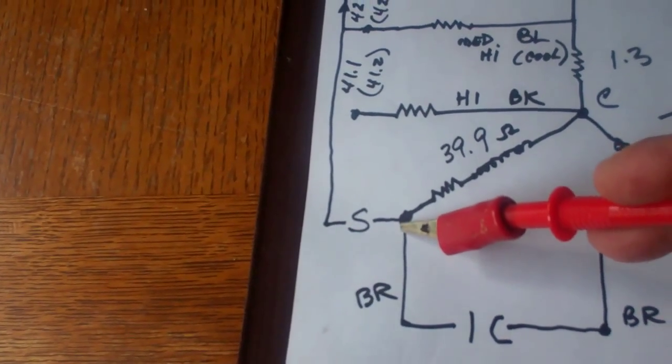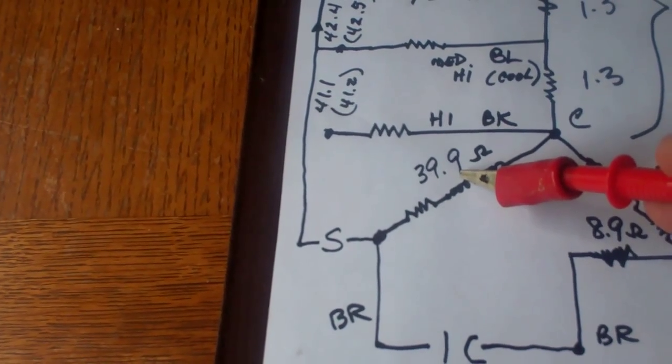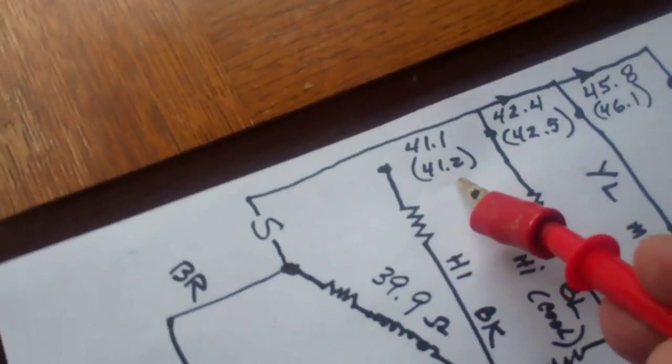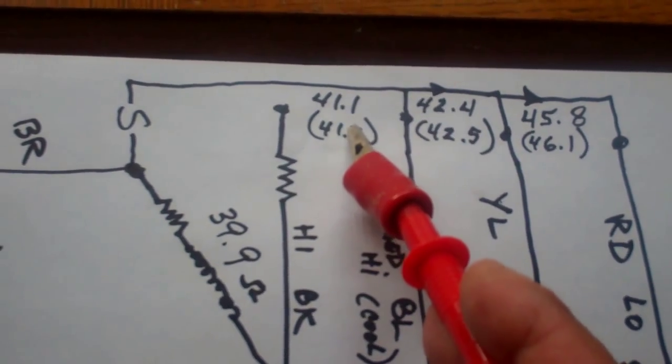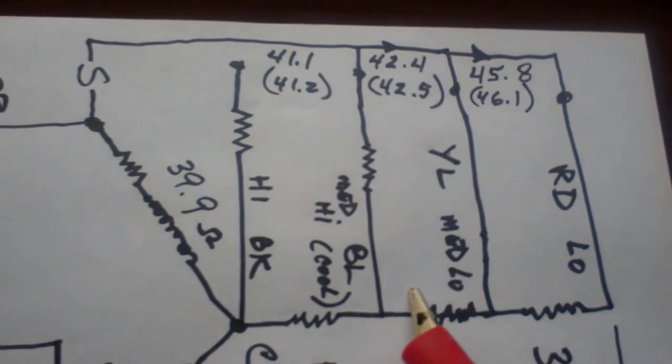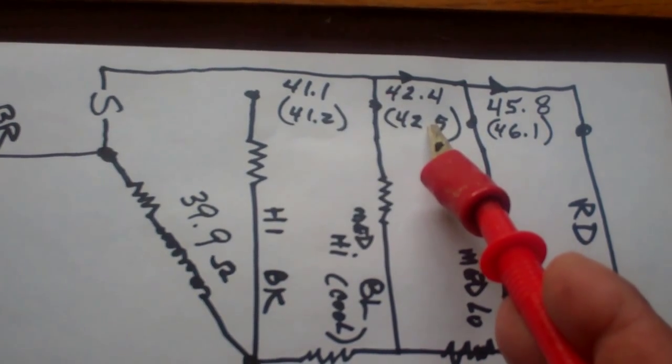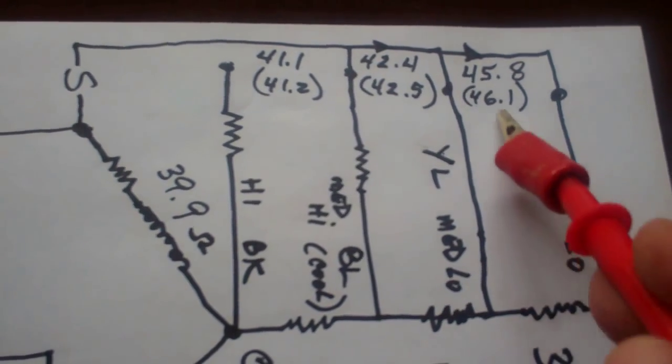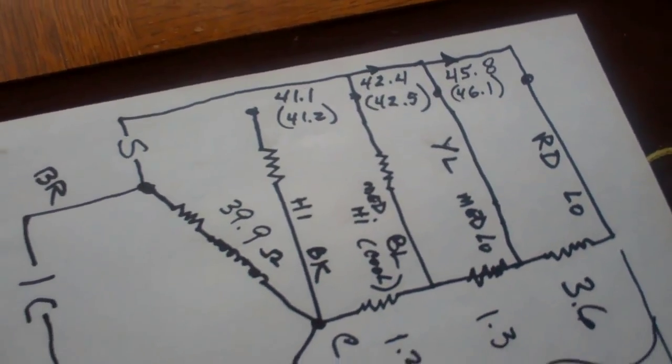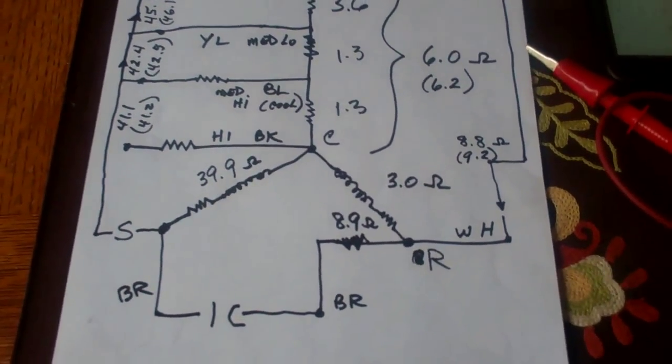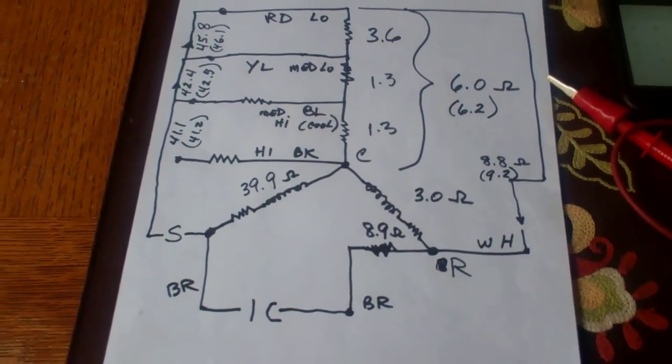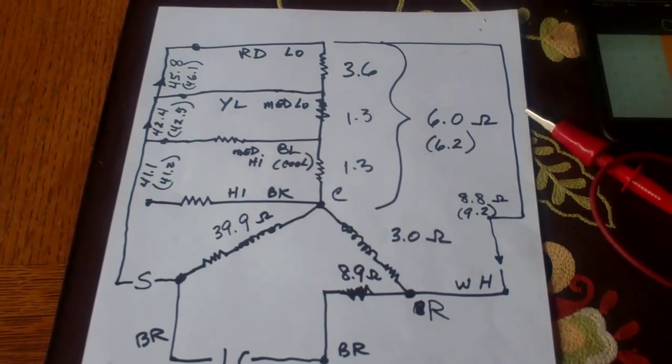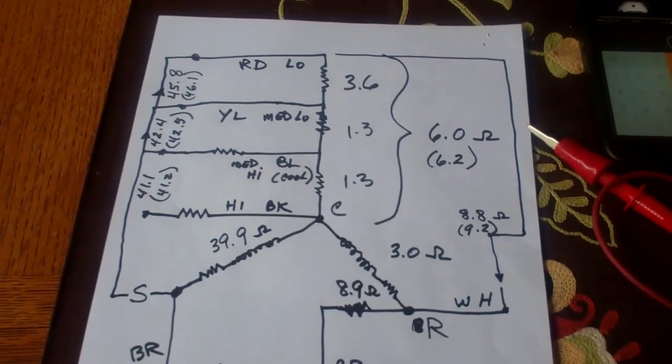And you can see I did, here's brown. So brown to black was 39.9. So if I went brown to blue, I'd be looking for 41.2. I got 41.1. From brown to yellow, I'd be looking for 42.5. I got 42.4. And from brown to red, I'd be looking for 46.1. I got 45.8. Very close. So I'm happy with all those readings. It all makes sense. They all add up. There's no reason why this motor shouldn't work. And it spins freely, so the bearings aren't shot on it. So we're going to throw that motor back on.